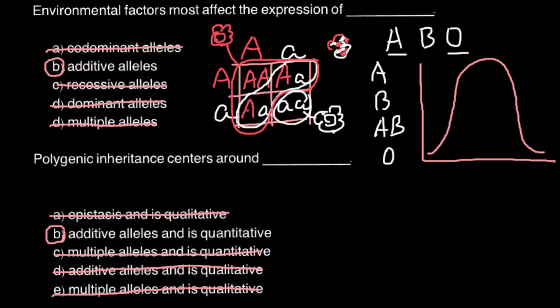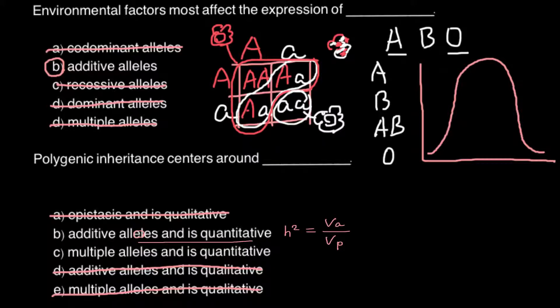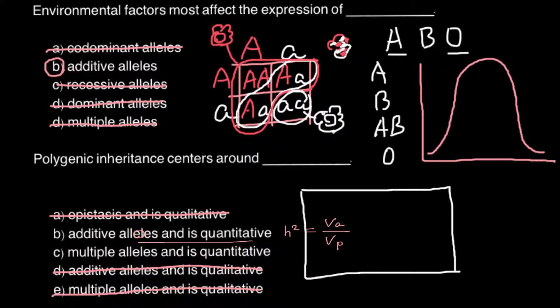For polygenic inheritance we can also use the heritability formula: h² equals variance additive divided by variance total phenotypic. You have to remember this formula — if you study quantitative genetics, plant breeding, and selection, you will use this formula all the time. That's all for today; thank you for your attention. Please write your comments and questions if you have any, and see you in the next video!